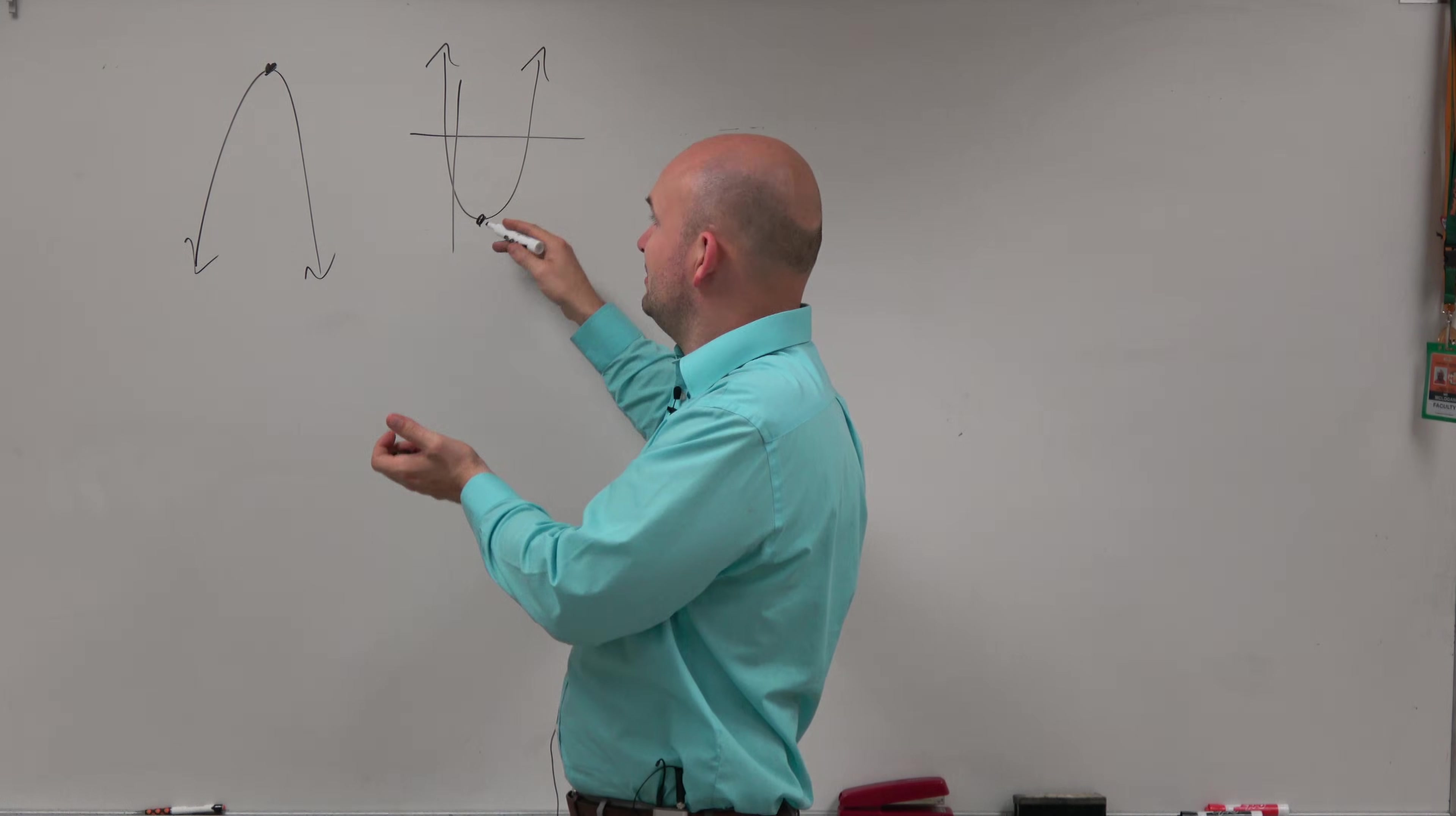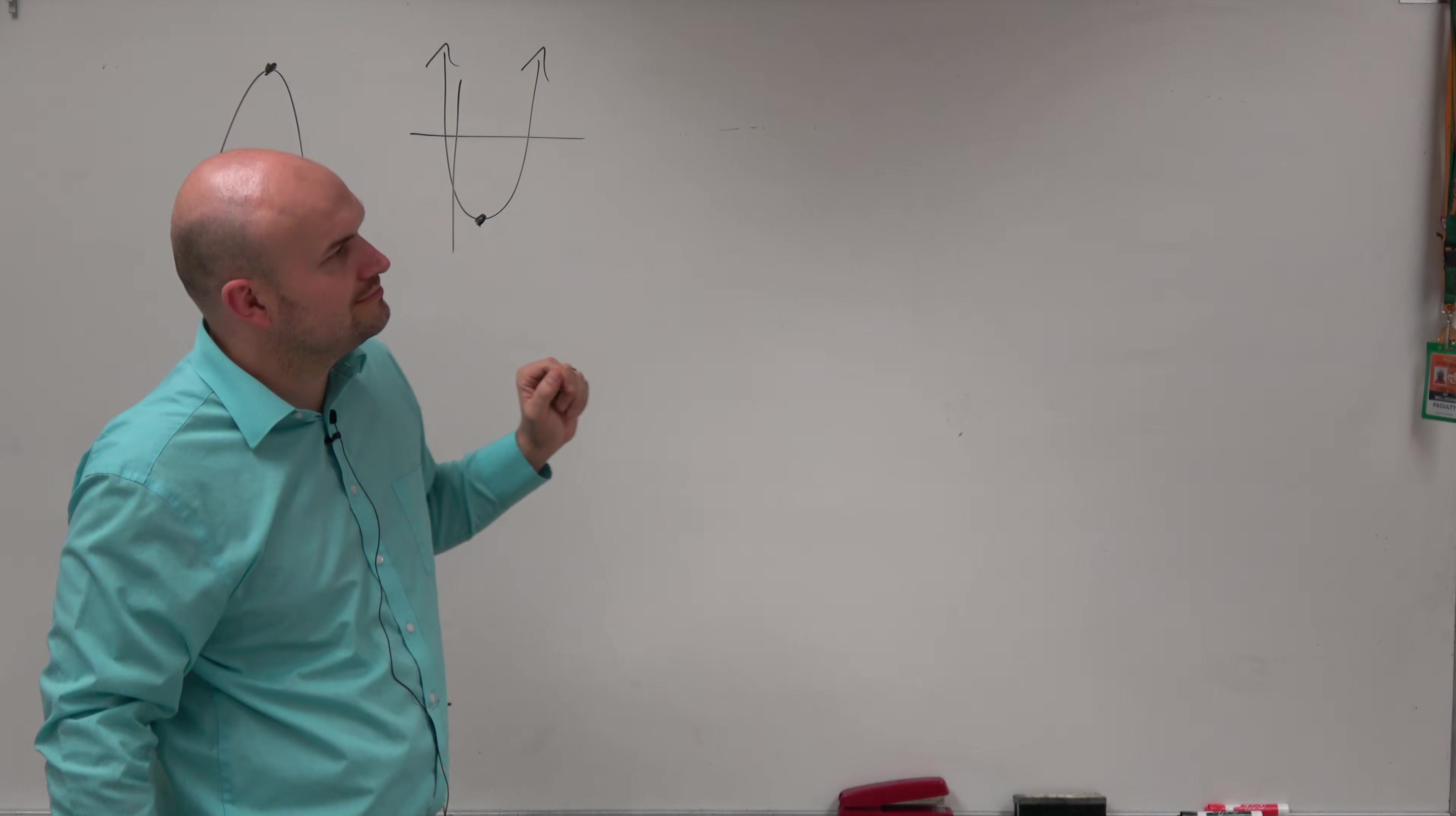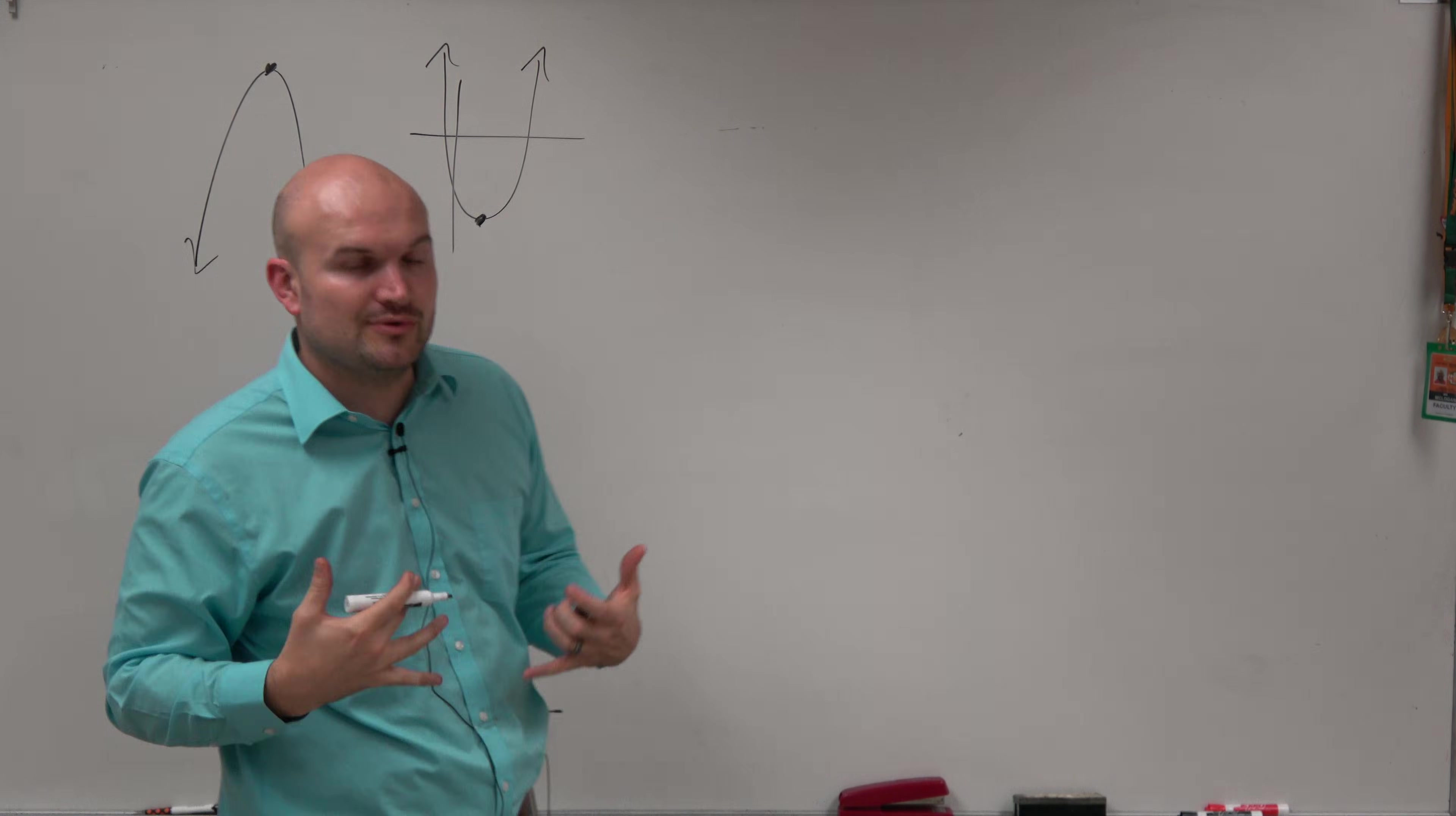In the same example on this quadratic, the graph only goes as low as this value. So this is the global min or absolute minimum value. The graph is never going to go below this point; it's going to continue going up into infinity.